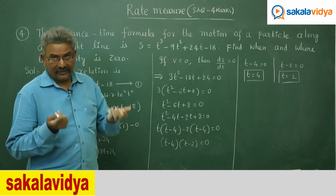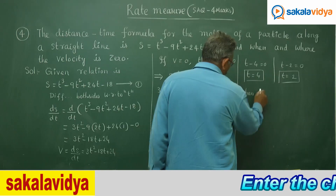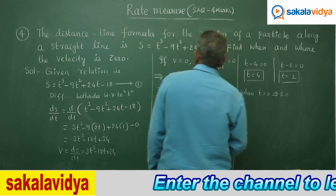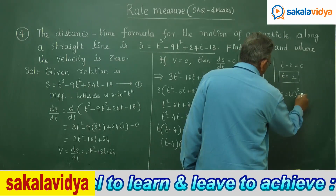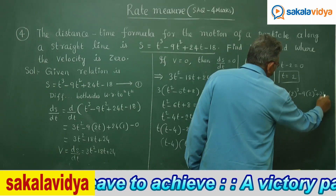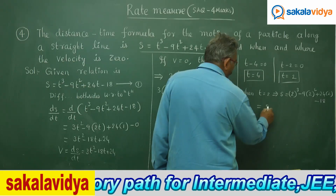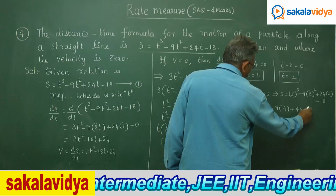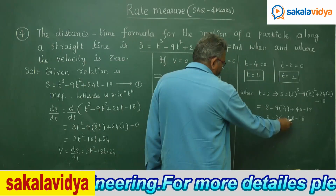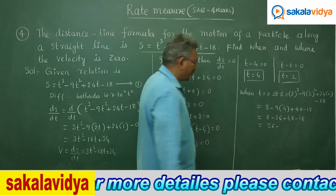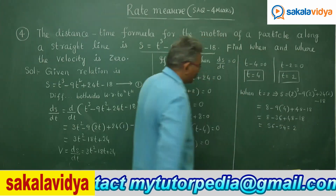Now we need to find 'where', meaning the s value at each time. When t = 2: s = 2³ - 9(2²) + 24(2) - 18 = 8 - 36 + 48 - 18. Adding positives: 8 + 48 = 56; adding negatives: 36 + 18 = 54. So s = 56 - 54 = 2 units.